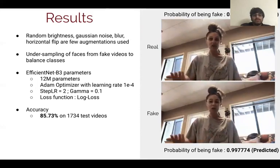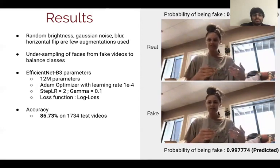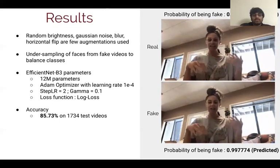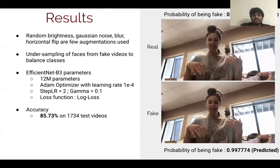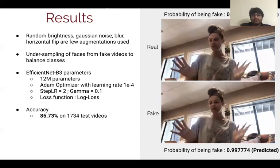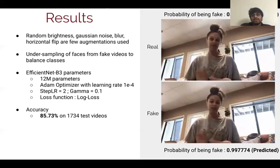I've used EfficientNet B3 with 12 million parameters. It uses Adam optimizer with a learning rate of 10 to the power of minus 4, and a loss function of log loss. I obtained an accuracy of 85.73% on 1,734 test videos.